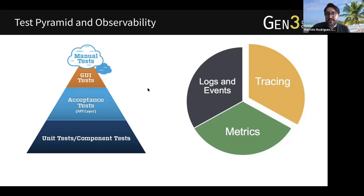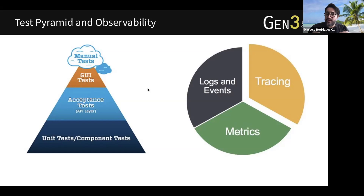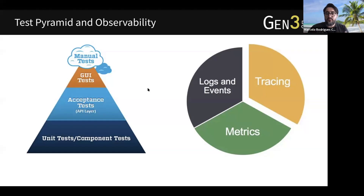In the mid layer, we have the acceptance tests — that's the API layer — where the code would actually be deployed against a test environment. The service endpoints would be instrumented, and we will make sure that all the services talk to each other and behave as expected: that with a given input, the output produced by the communication between different components results in the expected output.